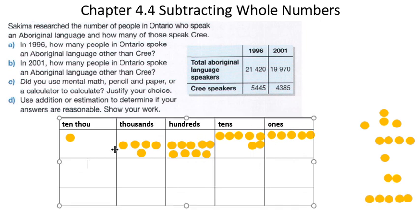So let's write that down here. And that's how we regroup and subtract using our place value chart. Thanks, everyone. Have a good day.